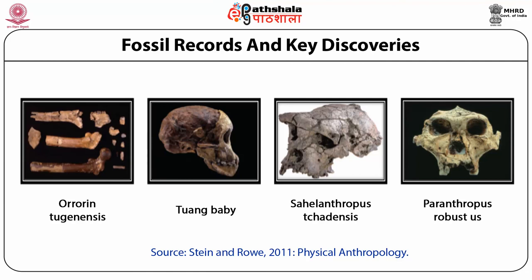During their work in Olduvai Gorge, Louis Leakey found fragments of a cranium having cranial capacity higher than Australopithecus and Paranthropus. The fossils were named Homo habilis, or 'handyman,' as they were associated with tools. These fossils were related to the Pleistocene period. Homo habilis has an average cranial capacity of about 631 cc, which is 20% greater than Australopithecus. The dentition and shape of the skull vault of Homo habilis were quite distinct from Australopithecus.